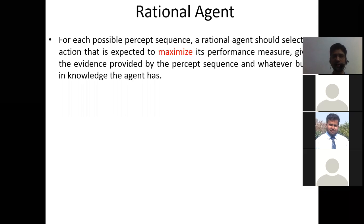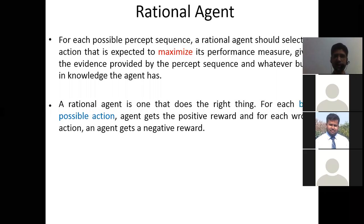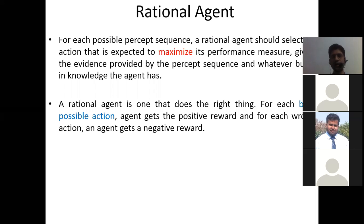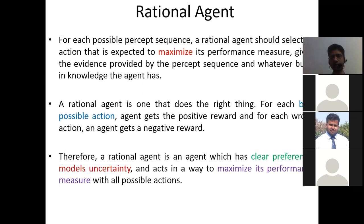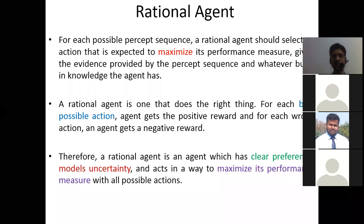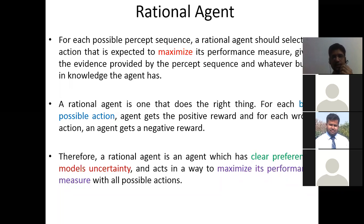A rational agent means you have to go for what is right as per rational human beings. A rational agent is one that does the right thing. For each best possible action, the agent gets a positive reward; for each wrong action, the agent gets a negative reward — meaning if you are doing the right thing, you will be awarded; if you are doing mistakes, you will be punished. A rational agent has clear preference, model and certainty, and acts in a way to maximize its performance measure.